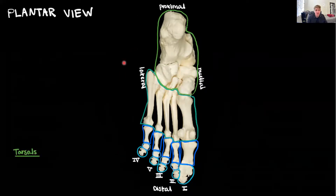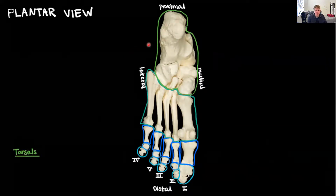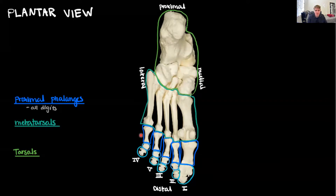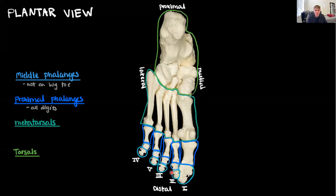Starting proximal and heading distal: the green region is going to be the tarsals, followed by the metatarsals, followed by our phalanges. We'll use the same terminology: proximal phalanges are most proximal, followed by the middle or intermediate phalanges. Notice the big toe does not have a middle or intermediate phalange — just like the thumb didn't. And then finally we have the distal phalanges.